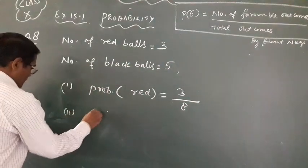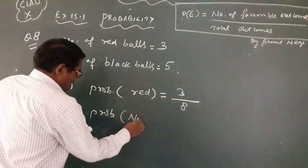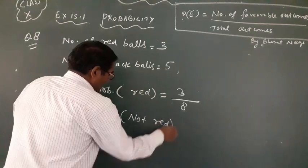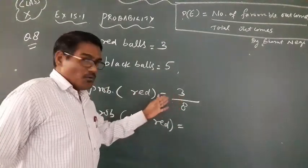Second part, what is it? Probability of not red ball. Not red ball. We can separate this from 1.